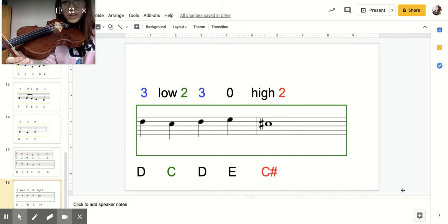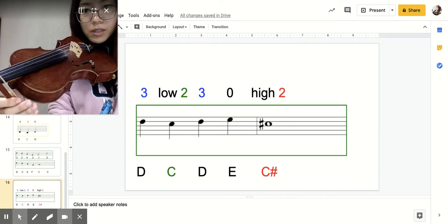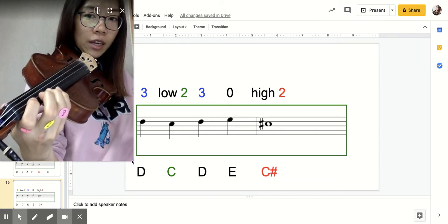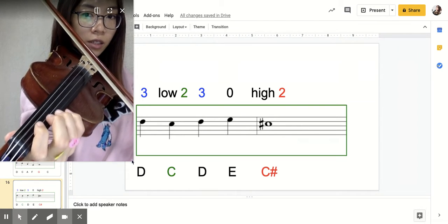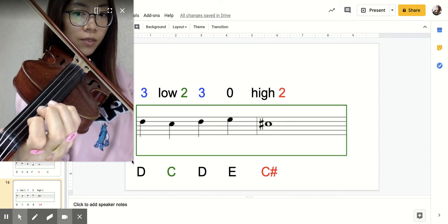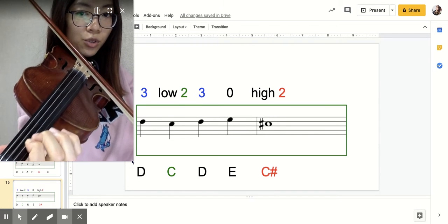Okay, now we're going to be working on a tricky spot in the piece because you now have to use a low two and a high two all at once. Let's start by finding the A string first finger low two.